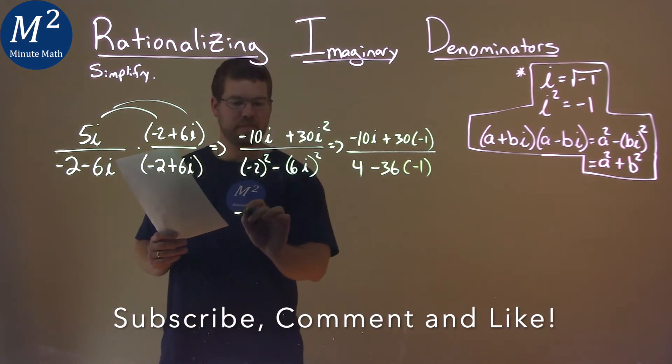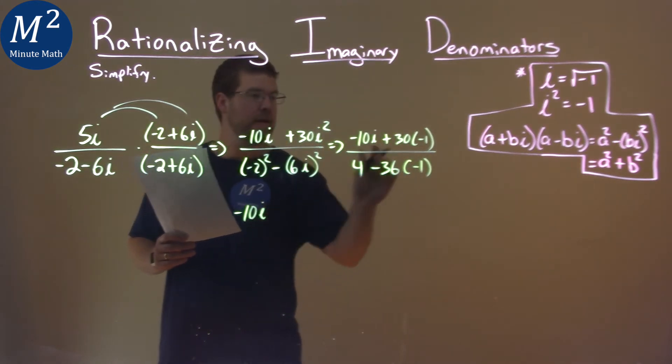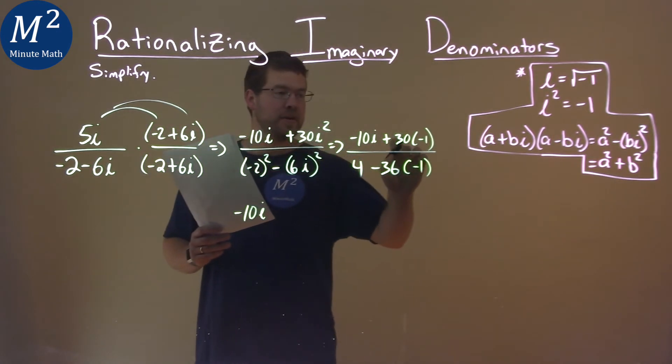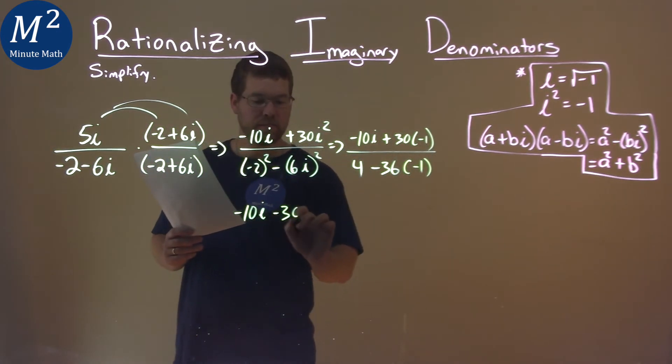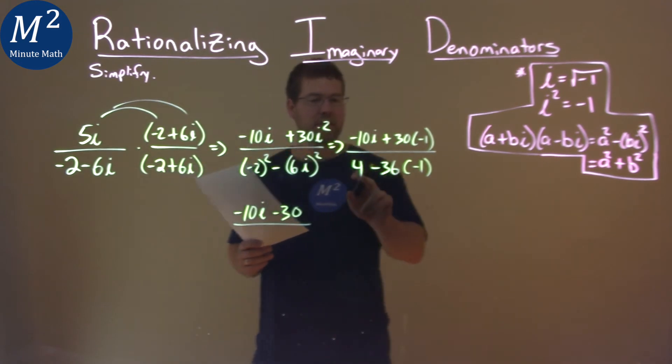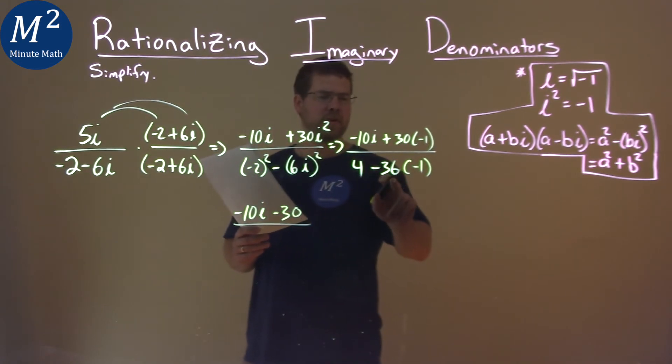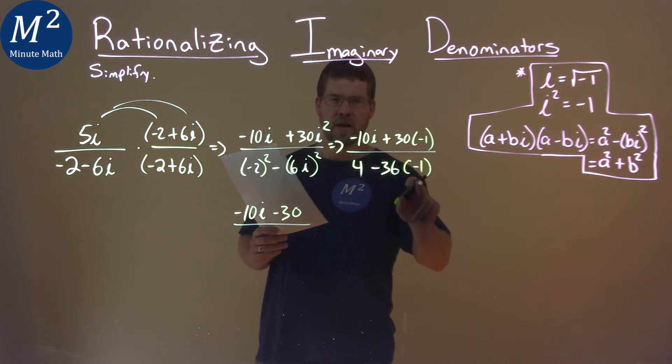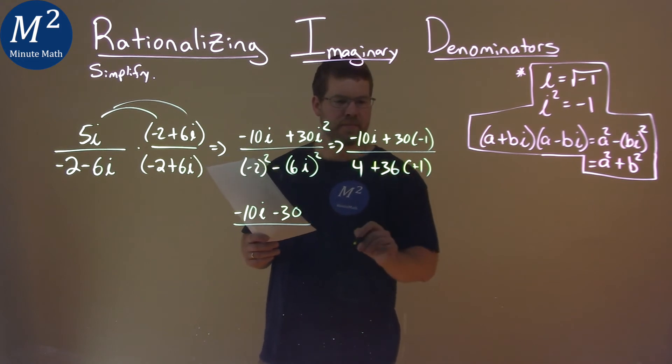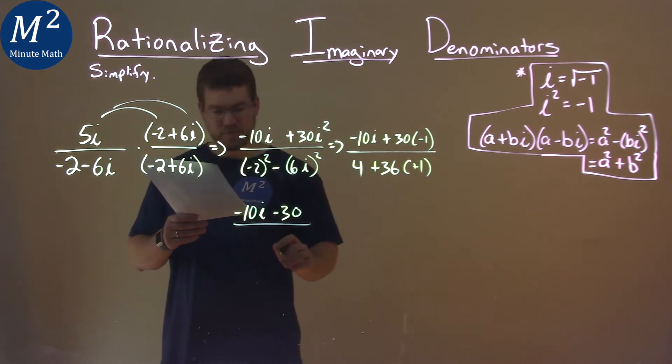Now let's keep simplifying. Negative 10i minus 30 now—30 times negative 1 is minus 30—over, now we have 4 minus 36. 36 times negative 1 is positive 36, so 4 plus 36 is 40.